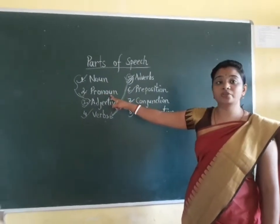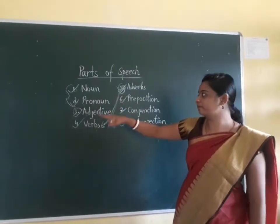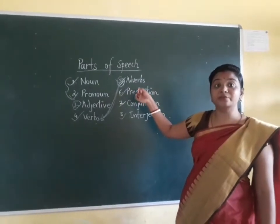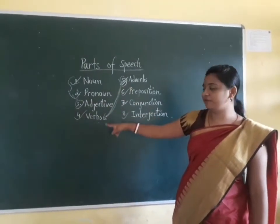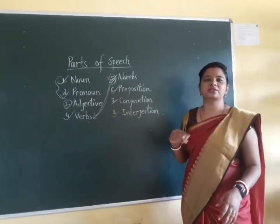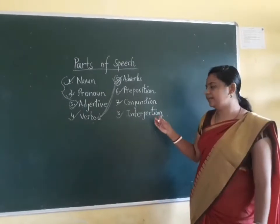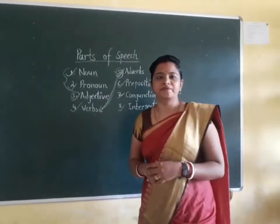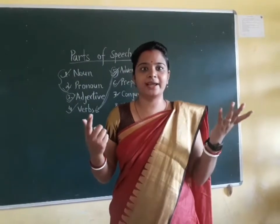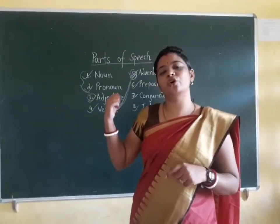So to recap: noun is the naming word; pronouns are used in place of noun; adjectives are describing words that describe noun or pronoun; verbs are action words; adverbs modify verbs or other adverbs; prepositions show position, direction or movement; conjunctions are the joining words that join different words, sentences and phrases; and interjections are expressions of strong sudden feeling — like Wow! So that was a short description of all eight parts of speech.